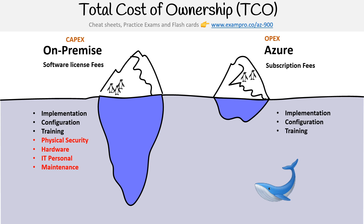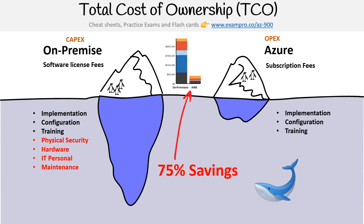You might ask, what is the amount of savings? Well, generally, people find that when they move from on prem to the cloud, they save 75%. That's a lot of money — 75% of what you generally would spend. And so now all this stuff on the left-hand side is now Azure's responsibility; you don't take care of those anymore. Azure is going to take care of it for you. So that's total cost of ownership.